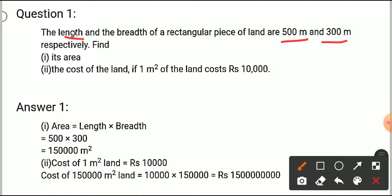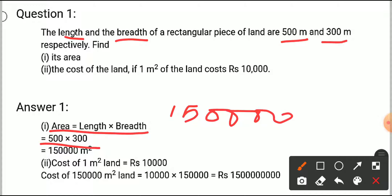In the first part we need to calculate the area. The length is 500 meters and the breadth is 300 meters. We know that the area of a rectangle is length multiplied by breadth, so we multiply 500 into 300. Five times three is 15, and there are a total of four zeros, so the answer is 150,000 meter square.